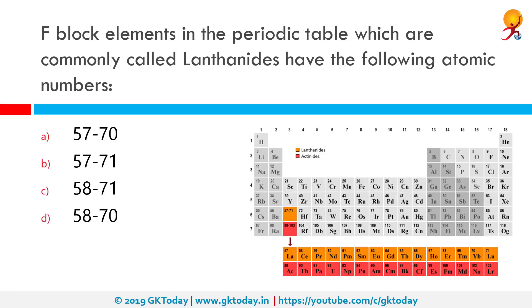F-block elements in the periodic table, which are commonly called lanthanides, have which atomic numbers? The correct answer is 57 to 71. The lanthanide or lanthanoid series of chemical elements comprises 15 metallic chemical elements with atomic numbers 57 to 71, from lanthanum through lutetium.